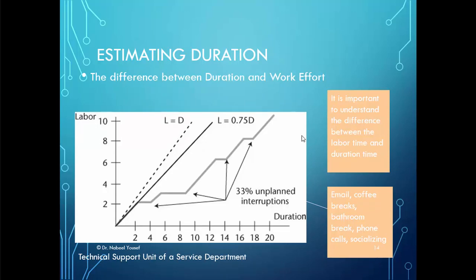A diagram shows the difference between duration and work effort. The labor time is 70 percent of the duration time, since there is almost 33 percent of unplanned interruptions such as emails, coffee breaks, bathroom breaks, phone calls, and socialization. We have to consider this when estimating the duration and comparing work effort versus duration.